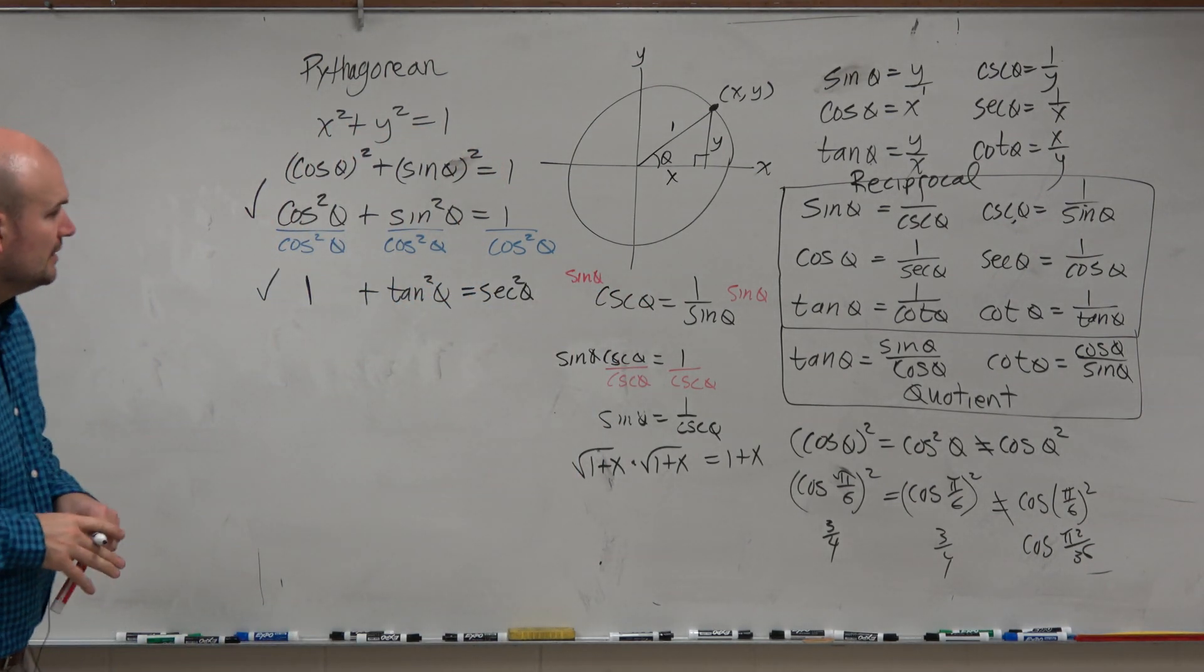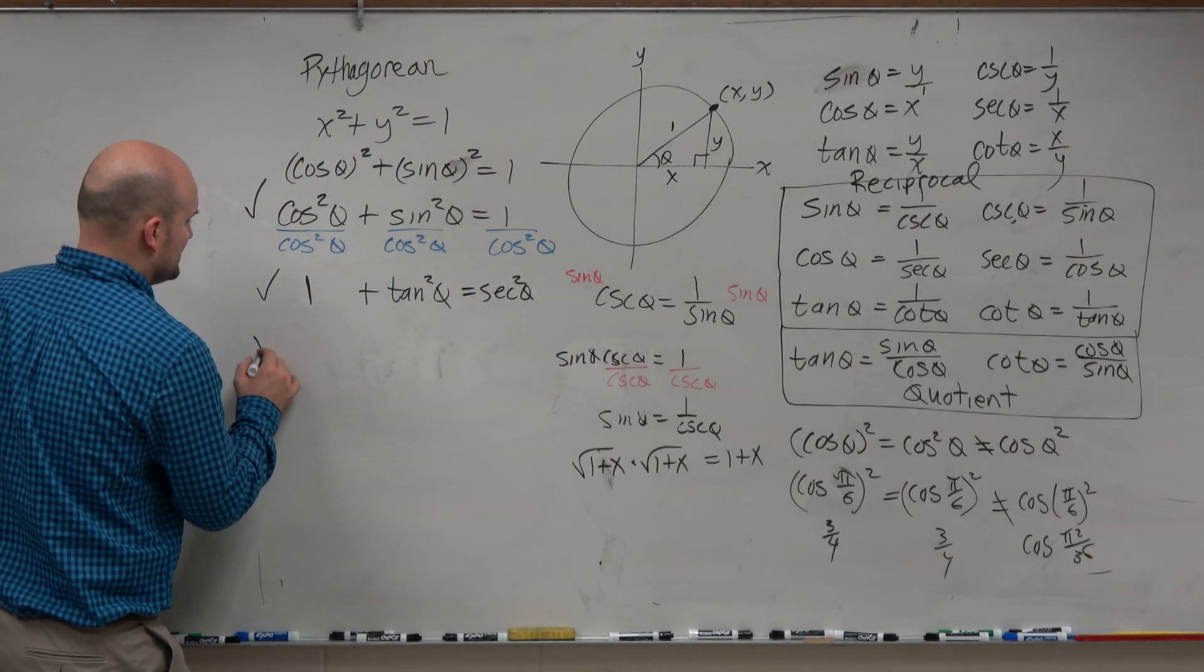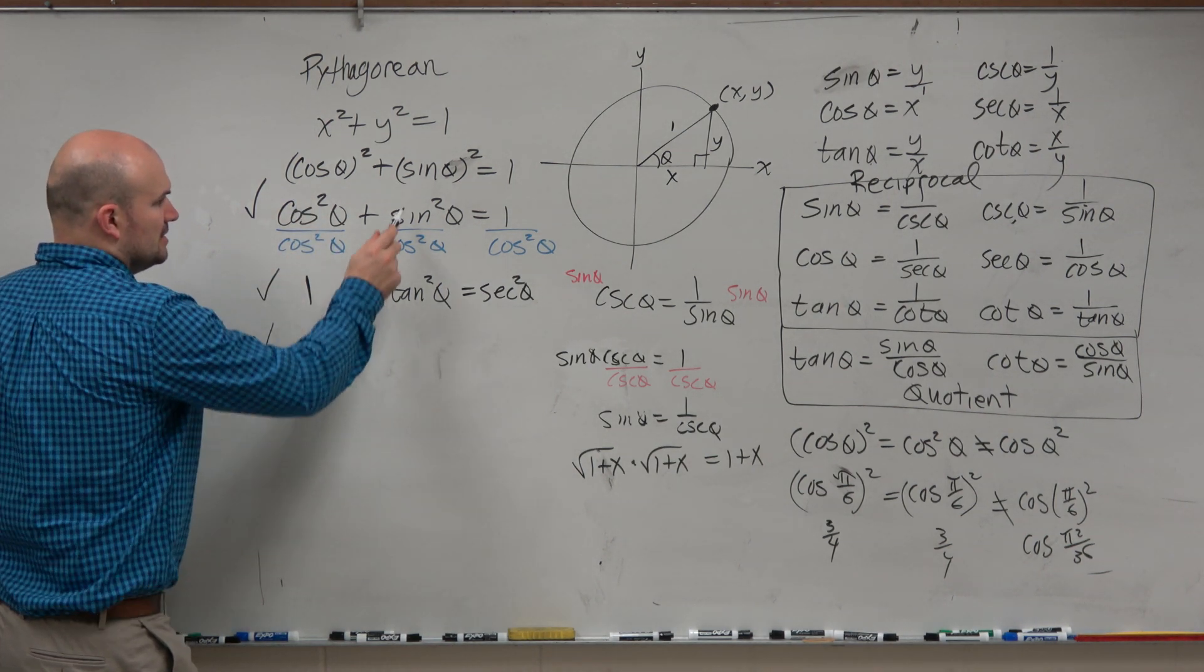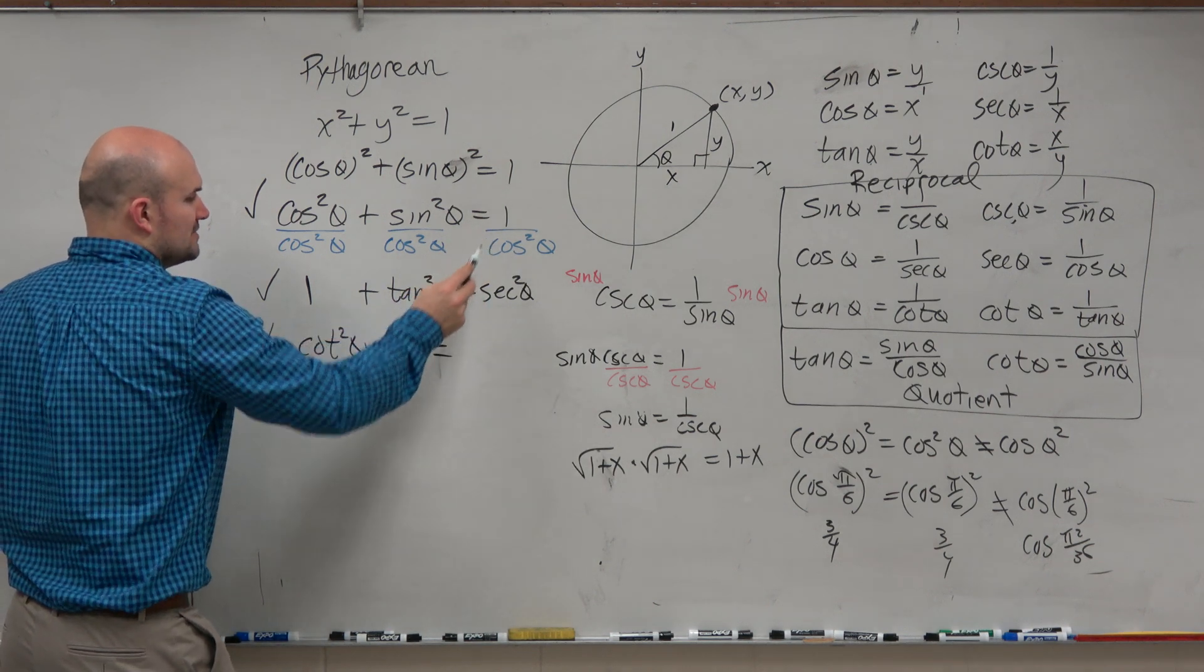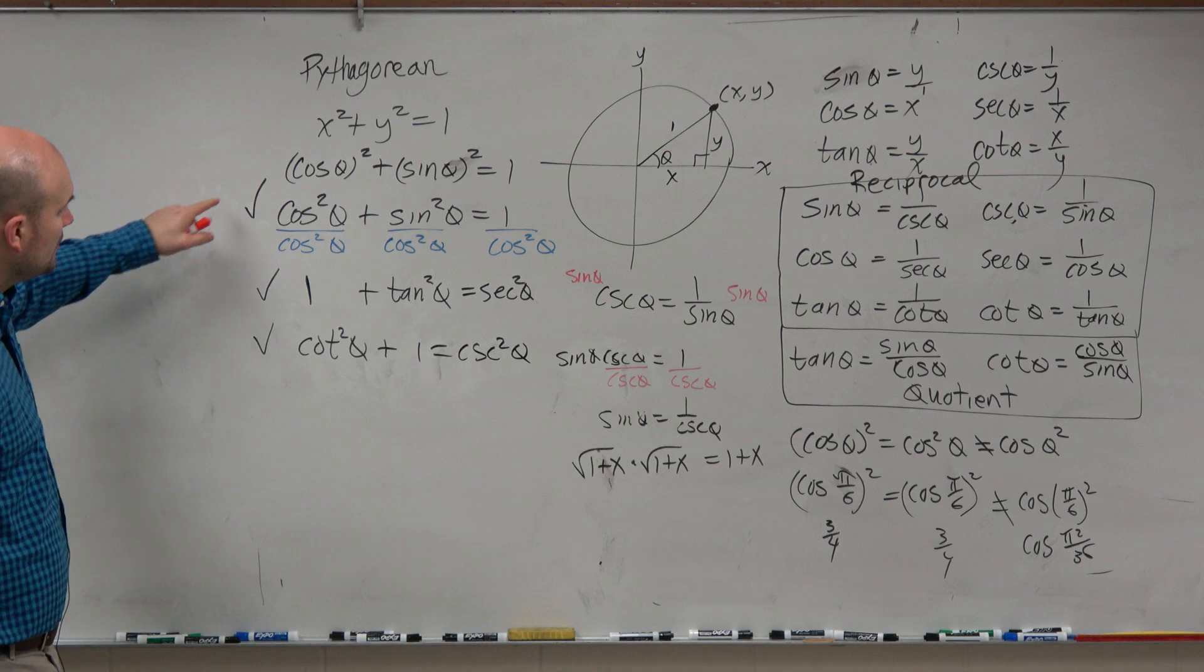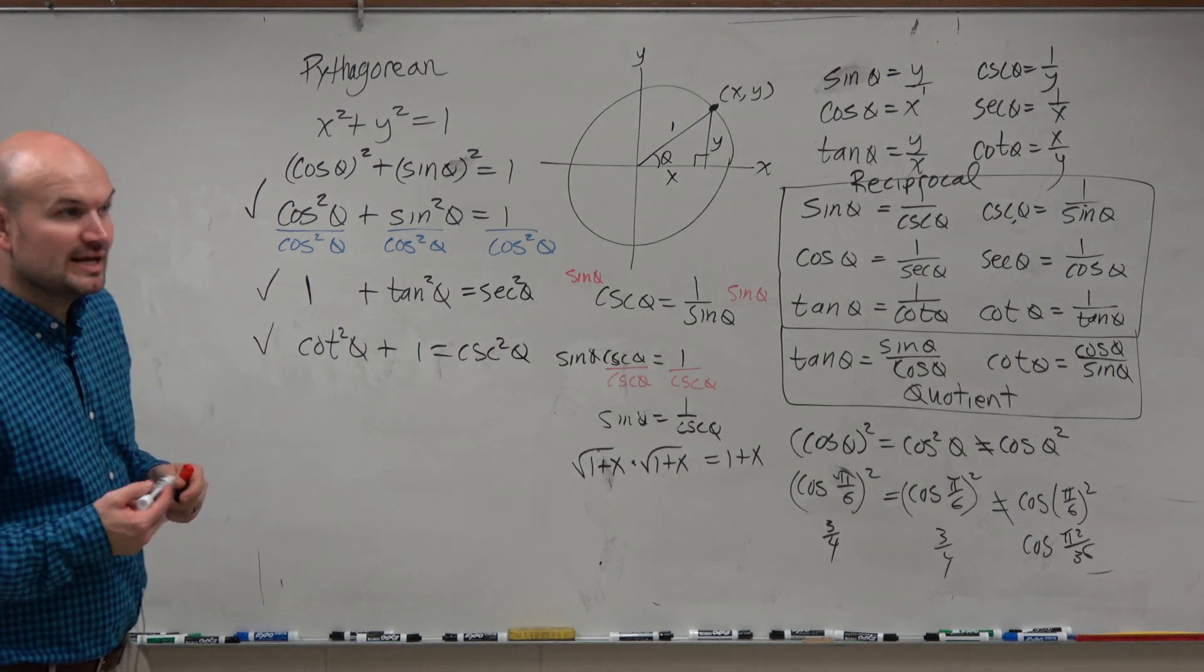OK, that's number 2. Now, to save us some time, what if we would have done sine? Cosine over sine would have been cotangent squared of theta. Sine over sine would have been 1. 1 over sine would have been cosecant. OK, those are your three Pythagorean identities.